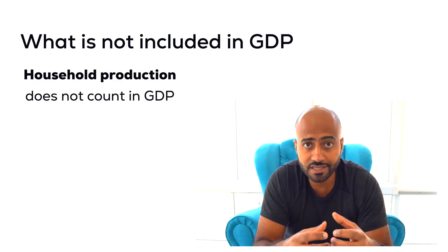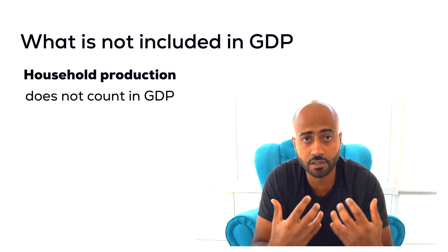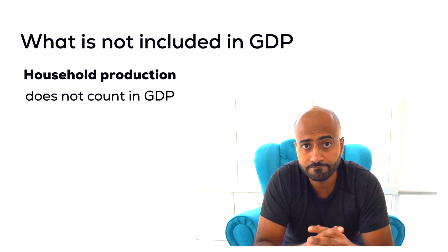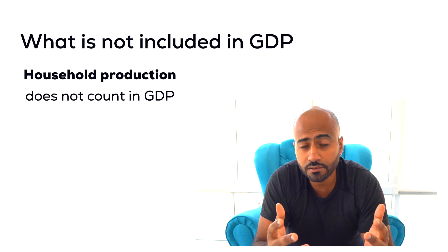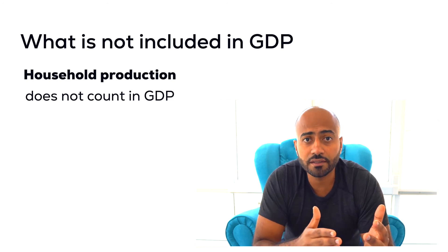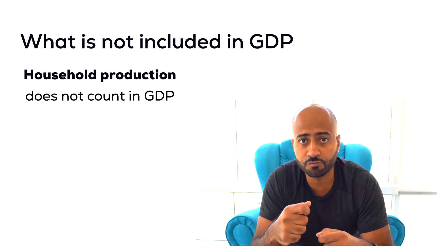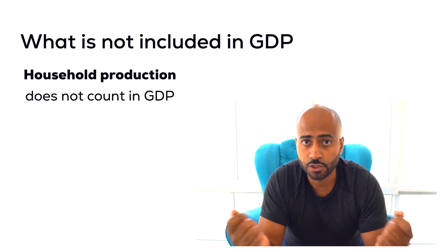Another issue with GDP in general is that it's a measure of market values — things have to be produced and sold in markets to count in GDP calculations. There's a lot that happens in the economy that doesn't go into market transactions. For instance, household production: things we produce at home that increase our quality of life but are not sold in the market.